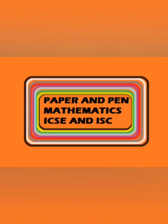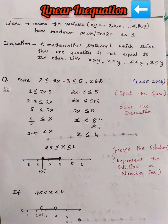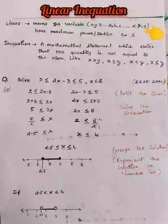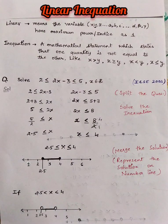Hello students, welcome back to our YouTube channel Paper and Pen Mathematics for ICSC and ISC. Our topic is linear inequation. The word 'linear' means all variables will have a maximum power of one, whereas a mathematical statement which states that one quantity is not equal to another is an inequation, such as x > y, x ≥ y, x < y, and x ≤ y.